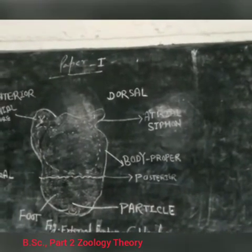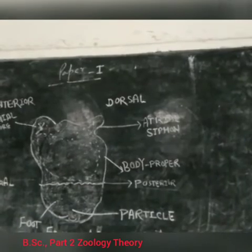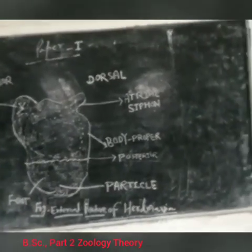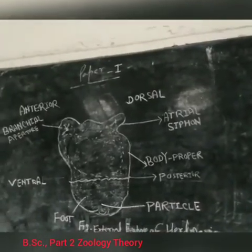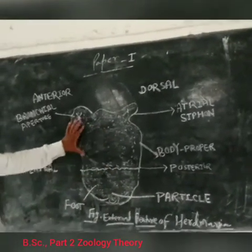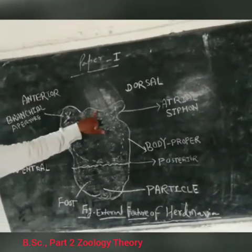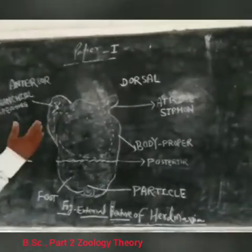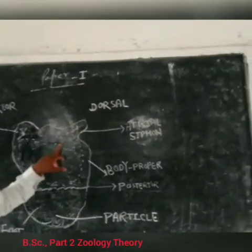Herdmania's body has a definite orientation. The anterior end of the body is the branched aperture, which represents the anterior end.